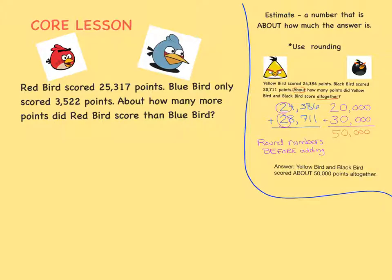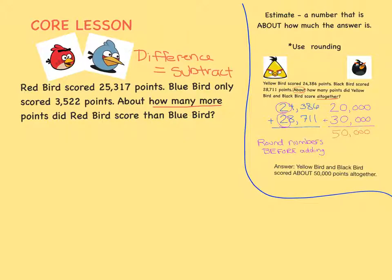This problem has some key words as well. Because it's asking how many more, we know we're trying to figure out the difference between two numbers. Difference means to subtract. The other key word we see is about. We know that about means we don't need an exact answer, so we're going to estimate again.